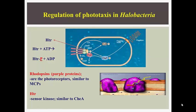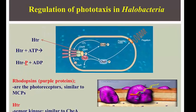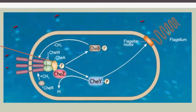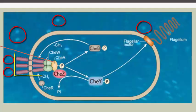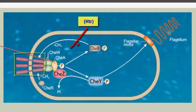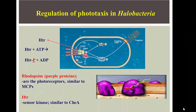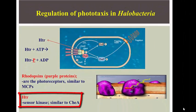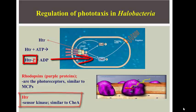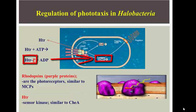Regulation of phototaxis is governed by a two-component regulatory system. The signal is light. Rhodopsin is the photoreceptor, which is similar to chemoreceptors or MCPs in chemotaxis, and HtrII is the sensor kinase, which is similar to CheA in chemotaxis. The phototaxis signaling pathway utilizes part of the chemotaxis pathway. The sensor kinase HtrII responds to the light-activated photoreceptor rhodopsin, autophosphorylates, and transmits the signal to CheY, which directs the movement of the flagella.